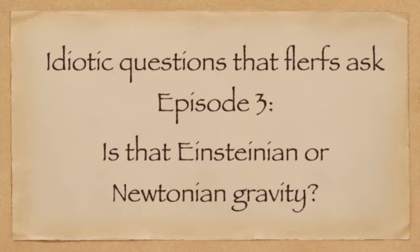At the risk of a spoiler alert, when these two theories are applied to non-relativistic terrestrial systems, they turn out to be observationally indistinguishable — which is a fancy way of saying that for all practical purposes, the two theories produce identical results on the surface of Earth.